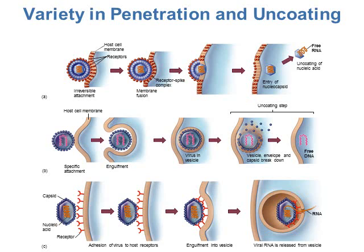This image shows the two penetration and uncoating methods. Figure A shows fusion — the viral envelope fuses with the host cell membrane and the capsid with nucleic acid is pushed into the host cell. Parts B and C show endocytosis methods, where instead of the envelope fusing immediately, the entire virus is brought in. Then the envelope disintegrates and the nucleic acid is released, or the nucleic acid exits the vesicle as shown in part C.